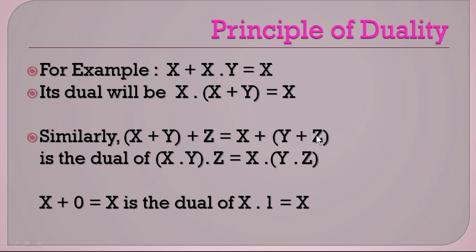Now we will see some examples. The first one: x + x·y = x. The dual will be x·(x + y) = x. You can see that the plus sign has been converted to a dot sign and the dot sign has been converted to a plus sign. Since it is now a plus sign operator inside, it is placed in parentheses.